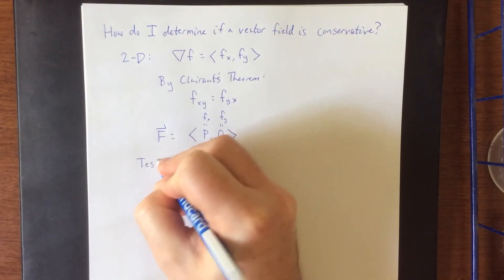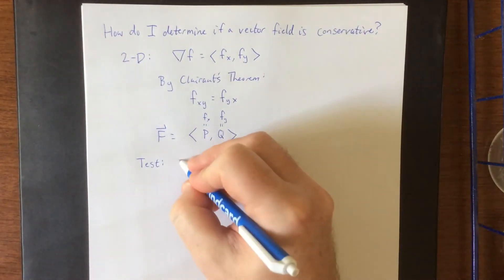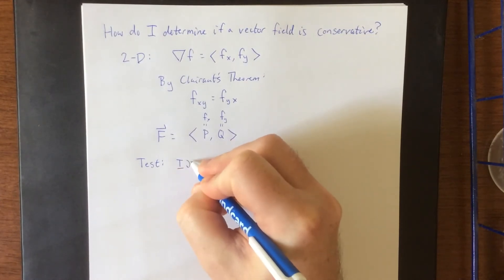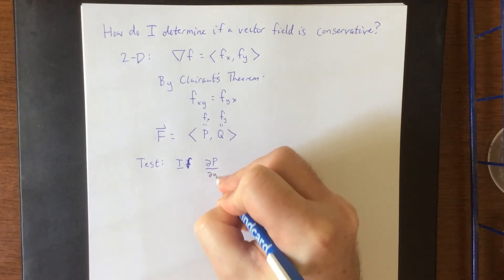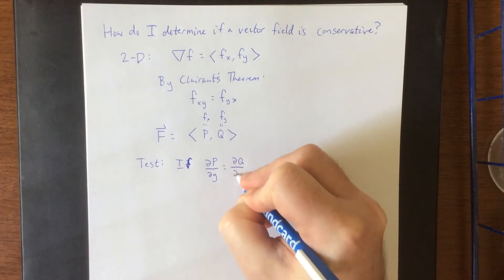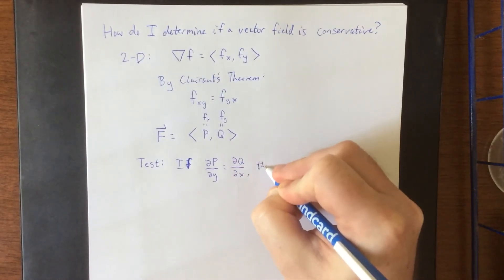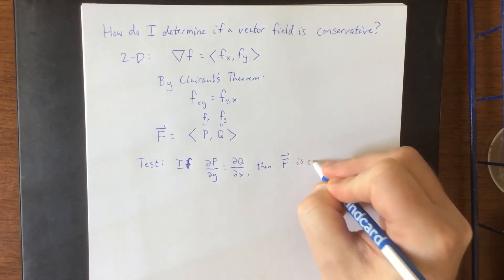So here is your test. Given vector field f with component functions p and q, if the partial derivative of p with respect to y is equal to the partial derivative of q with respect to x, then your field is conservative.